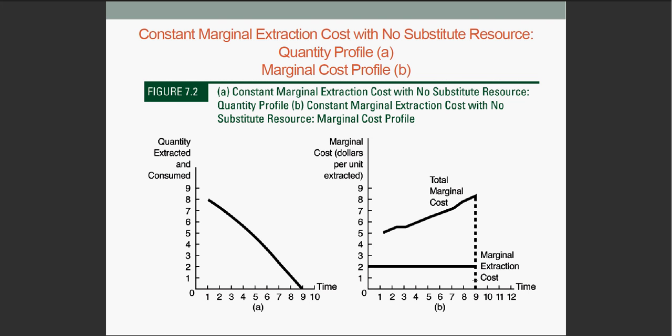And it will continue to increase as the quantity of the resource becomes lower and lower and more diminished. Until finally, the total marginal cost exceeds the willingness to pay and the quantity extracted falls to zero. This price, located at time 9 here, is called the choke price. Once the choke price is reached, transition must occur.